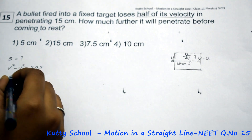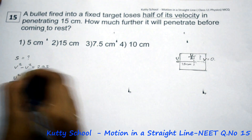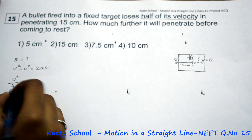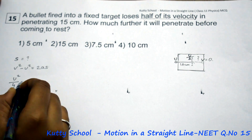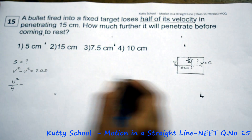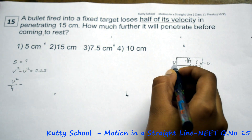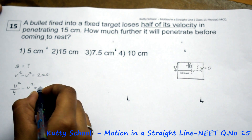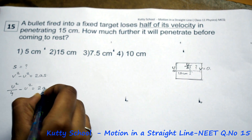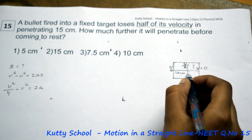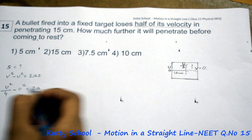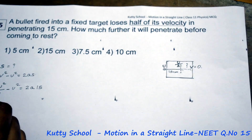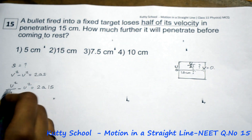So, u squared by 4 minus u squared is equal to 2a times distance. The distance for the first part is 15 centimetres.